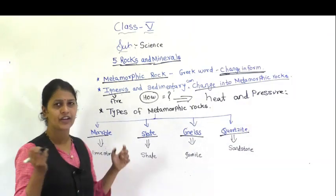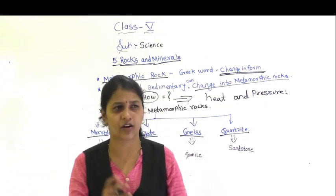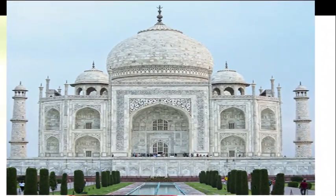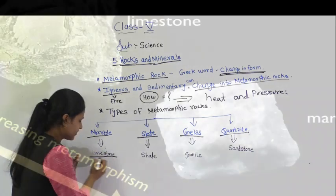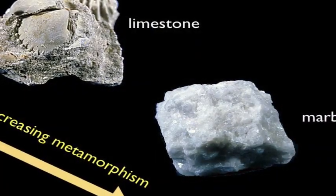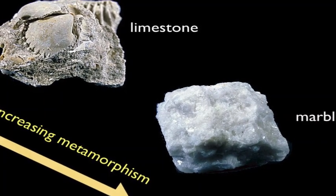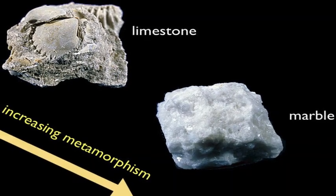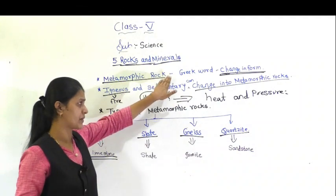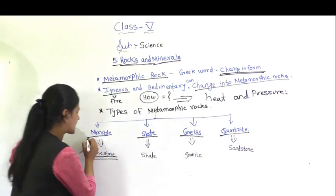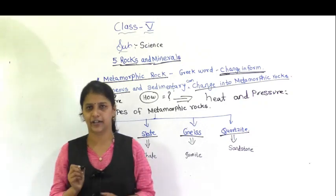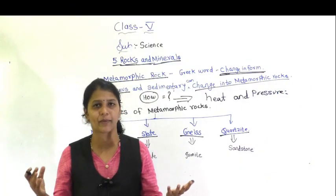For example, marble — where have you seen marble? The best example is the Taj Mahal, which is totally made up of marble. Marble is formed when limestone, which is a sedimentary rock, goes under some changes. Metamorphic means change in form, so when limestone undergoes changes, the rock formed is marble. It is used for construction purposes, for making buildings.